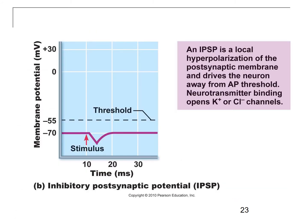With an IPSP, this is a local hyperpolarization. You'll open either potassium channels, letting potassium out, or chloride channels, letting chloride in. This is how you get an IPSP, or inhibitory postsynaptic potential.